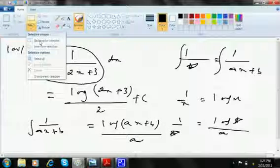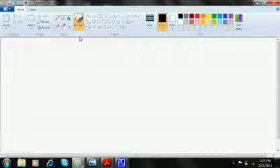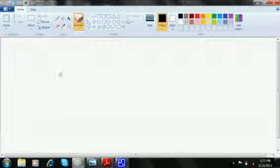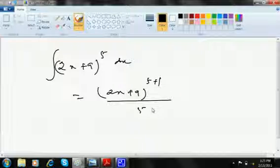Let's do another one. Let's say 2x plus 9 whole to the power 5 dx. So this is simply like 2x plus 9 whole to the power 5 plus 1 divided by 5 plus 1. I am not forgetting to divide by 2 plus c.